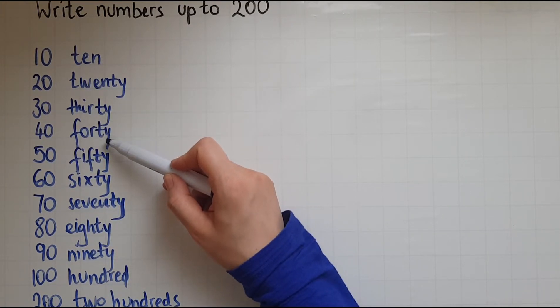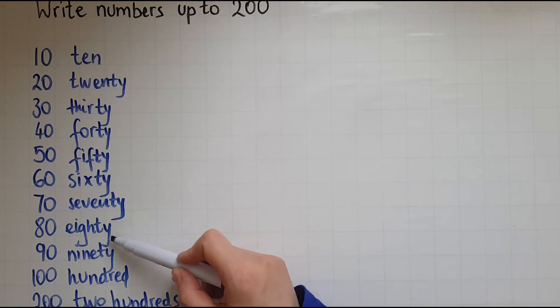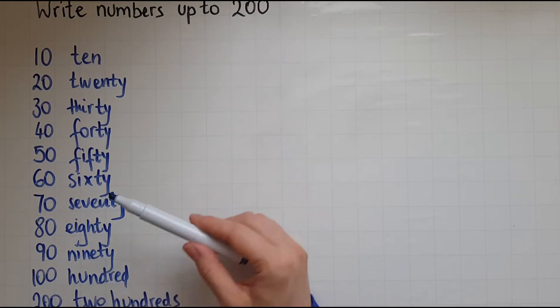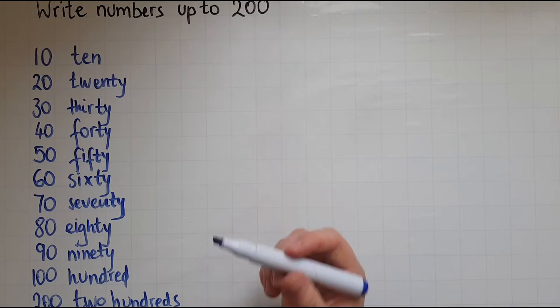So we see the ty appearing up to 90, just as we say the words 90, 80, 70, 60 and so on. 100, 100 and two hundreds.